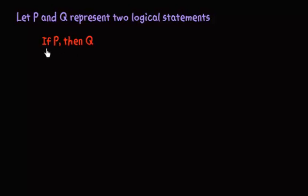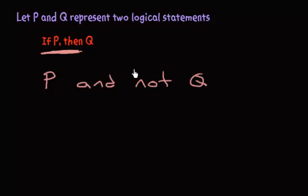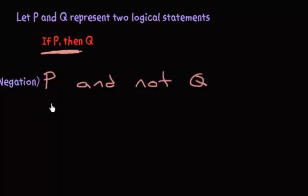And recall, the negation or when this is a false statement, it means that p had to happen, so p, and you didn't follow through with the consequent. So the negation would be p and not q. And that's it.